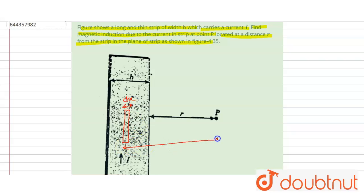Now the magnetic induction delta B will be μ₀I divided by 2πx into dx.